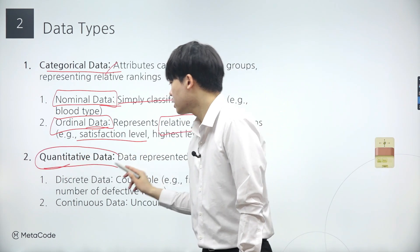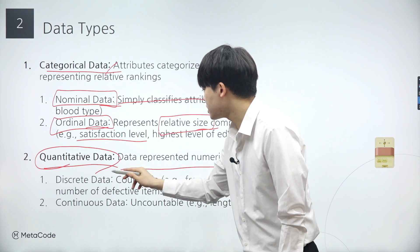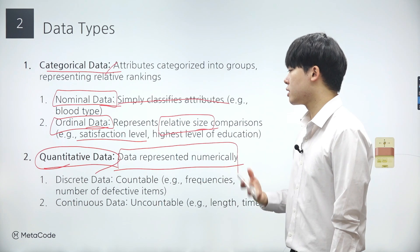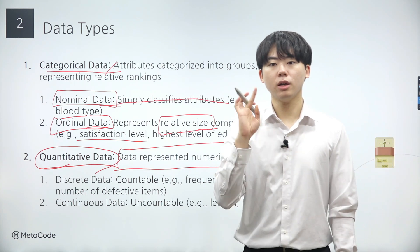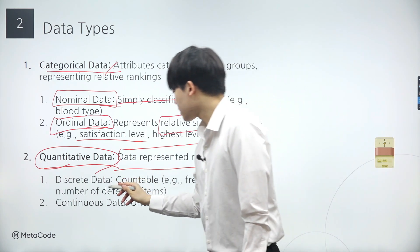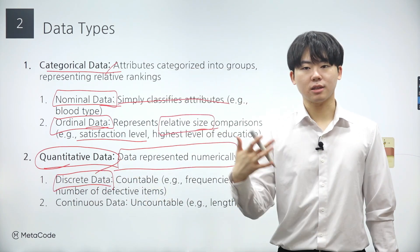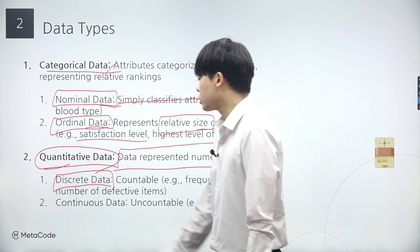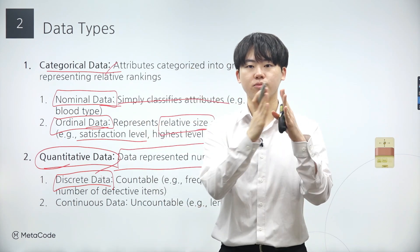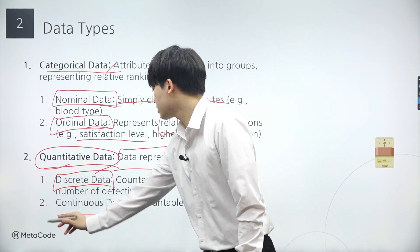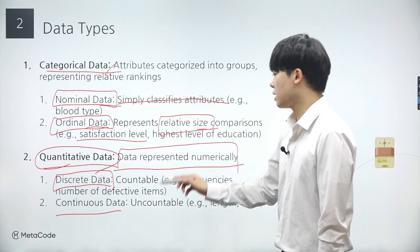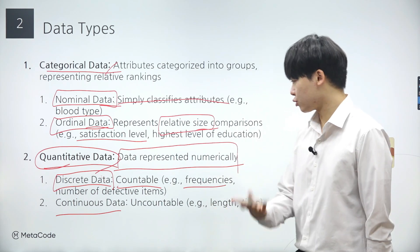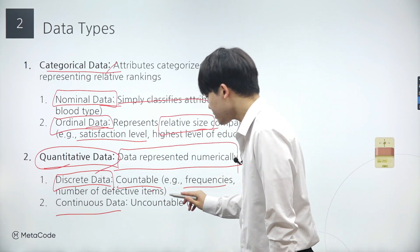On the other hand, quantitative data can be represented numerically. Just as we have both integers and real numbers in number systems, discrete data consists of whole numbers or integers and represents distinct and separate values. Discrete data can only take on specific distinct values without any intermediate values between them. Continuous data, on the other hand, is a type of quantitative data that can take on any value within a given range and can be measured infinitely precisely. The most significant feature of discrete data is that it is countable, such as frequencies and the number of defective items.